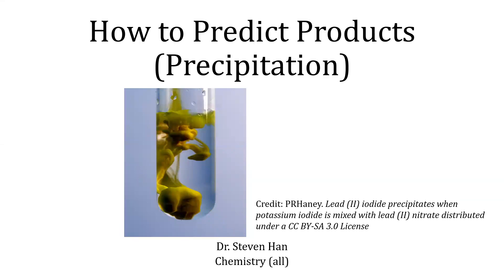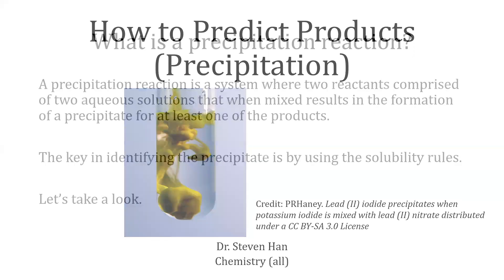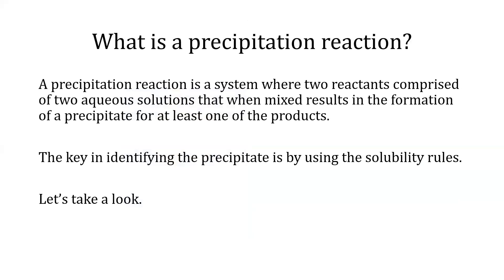This lesson is on predicting products involving precipitation. A precipitation reaction is a system where two reactants comprise two aqueous solutions that, when mixed, results in the formation of a precipitate for at least one of the products. The key in identifying the precipitate is by using the solubility rules. Let's take a look.